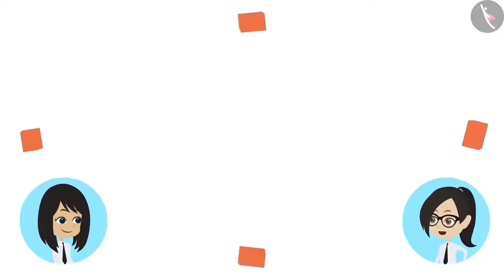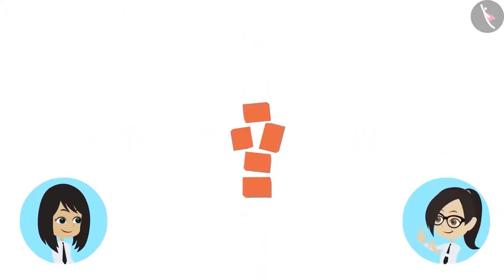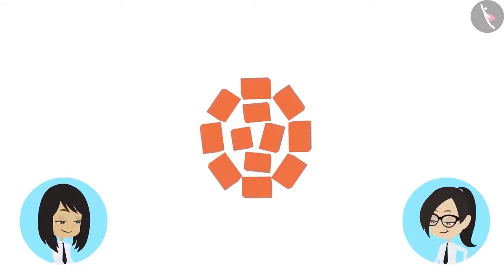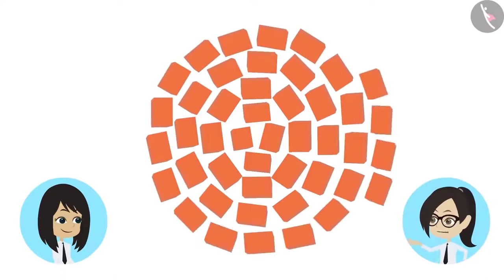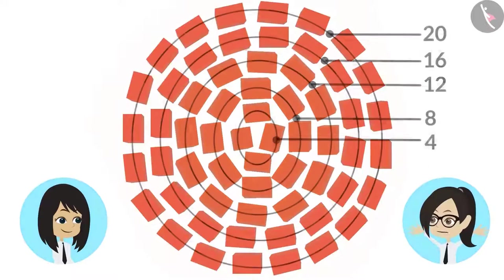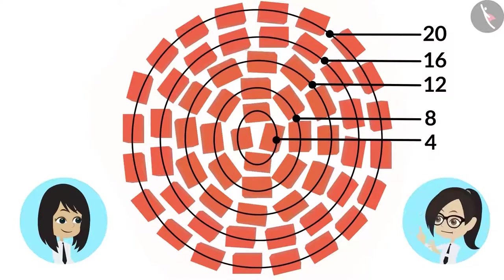Here are a few bricks. Let's make patterns using them. Let us first keep these four bricks like this. Now let's make a circle of bricks around them. Then make another circle of bricks around them, then another and then another one. Look, it became a circular pattern.